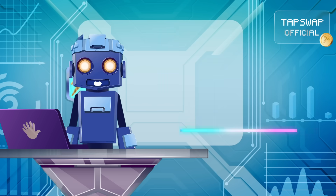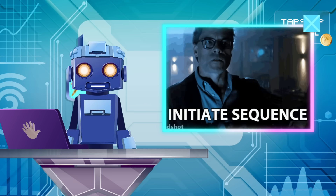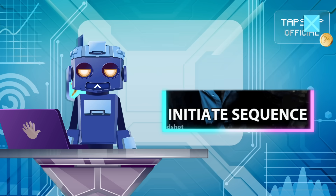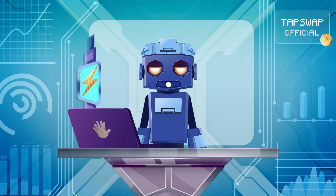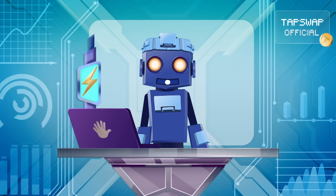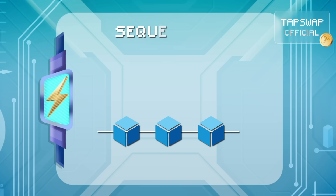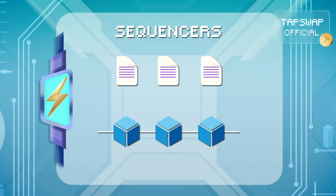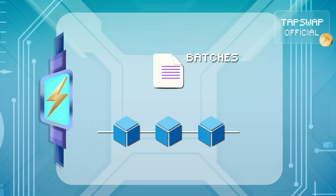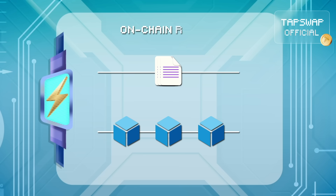The first step is sequencing transactions. Operators called sequencers collect transactions from users, process them off-chain, and bundle them into batches. These batches are submitted to the on-chain rollup smart contract.